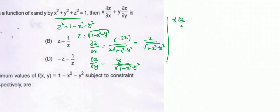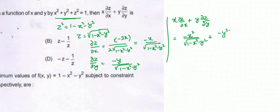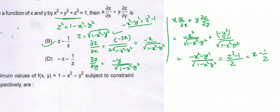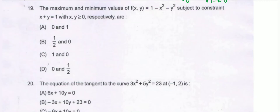So x·∂z/∂x + y·∂z/∂y equals (-x²-y²)/√(1-x²-y²). This equals (z²-1)/z, since z = √(1-x²-y²). Therefore, this simplifies to -1+z²/z = z - 1/z. Option B is correct.